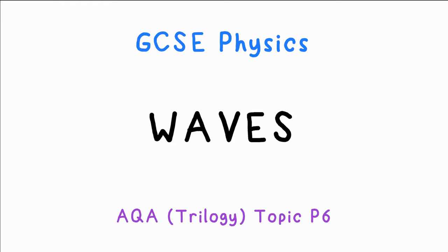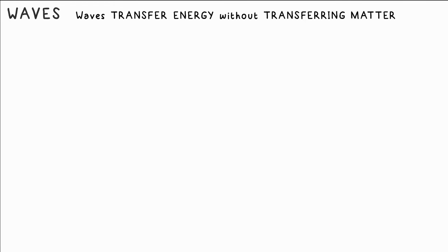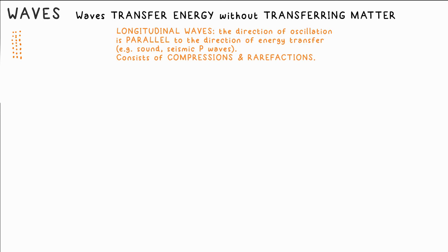All waves transfer energy without transferring matter. Oscillations or vibrations are passed along instead of the particles themselves. Longitudinal waves are those in which the direction of the oscillations is parallel to the direction of energy transfer, that is the direction the wave is going. Examples of these are sound waves and seismic P waves. P stands for primary because they're fast.